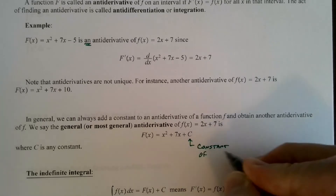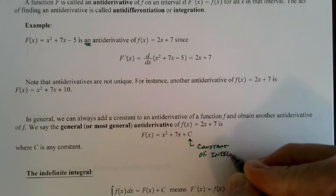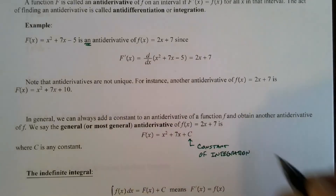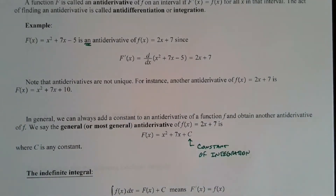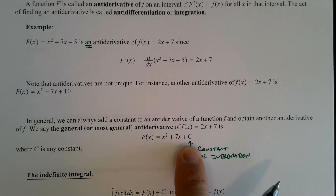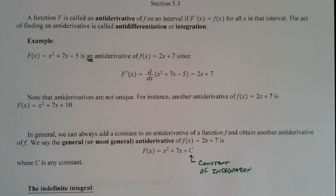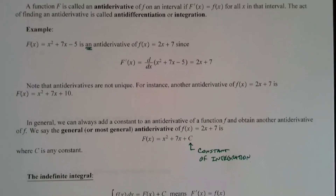So the most general anti-derivative of 2x plus 7 is x squared plus 7x plus c, where c is any real constant — sometimes called the constant of integration. When we talk about the derivative of a function, we get one particular function. When we talk about the anti-derivative, we get a whole family of functions that all differ by a constant.